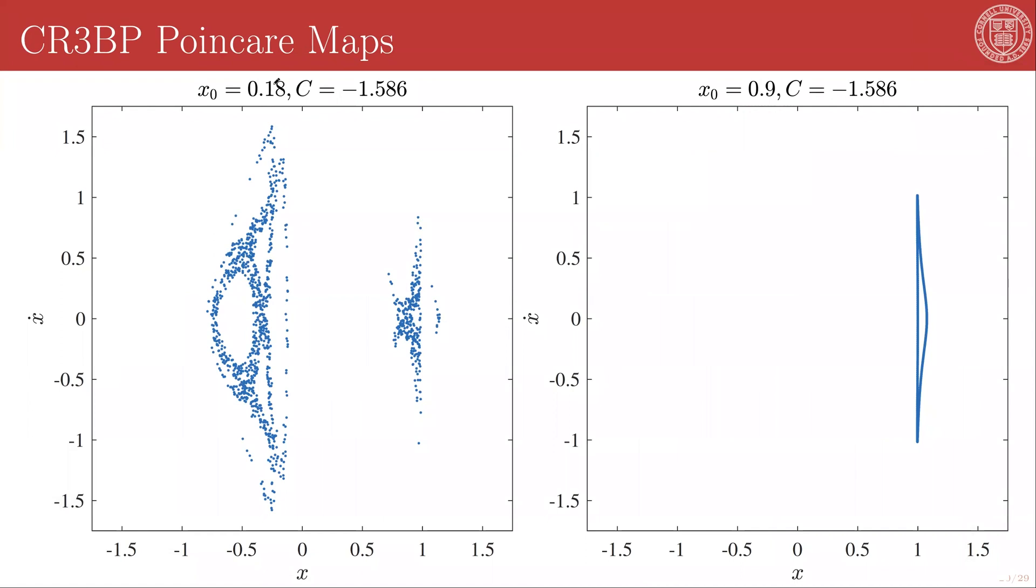Next, we're going to consider a case where X equals 0.18, and C is again set to negative 1.586, the L2 Jacobi constant. Now we get something completely different. We get a lot of individual points in extended regions. These are known as dense regions in the recurrence map, and these are a marker for chaotic behavior, for completely non-periodic and not even quasi-periodic behavior. We have density points both around M1 and M2, so we should expect our particle to orbit both the Earth and the Moon.